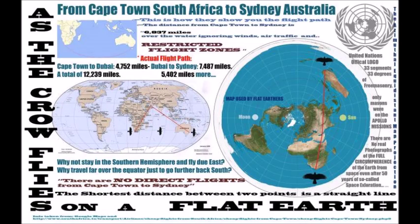Let's look at the picture on the left first — that's what's happening on your globe. They're going straight up to Dubai and then straight down to Australia, making the flight a total of 12,239 miles, when on a globe it should only be around 6,937 miles, because there are shortcuts on a globe but not on a flat earth.